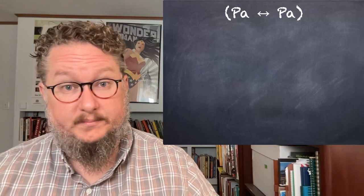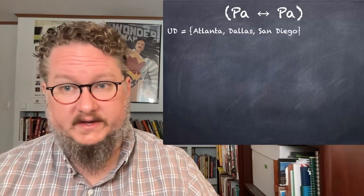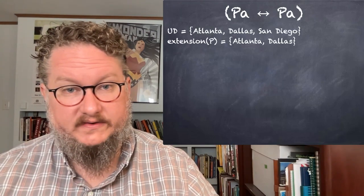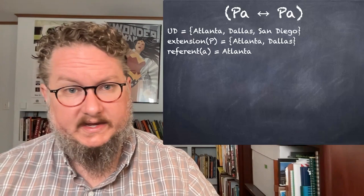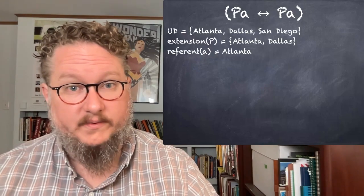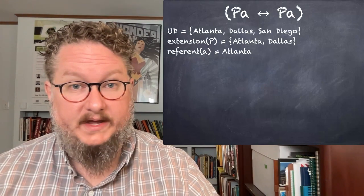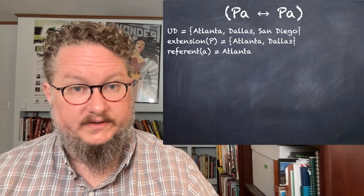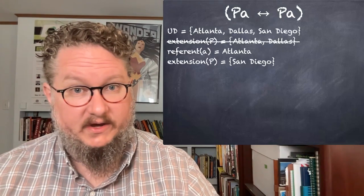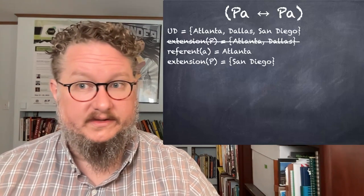Let's think about another statement: PA if and only if PA — a biconditional between PA and PA. With our universe of discourse and the extension of P including Atlanta and Dallas, and the referent of A referring to Atlanta: PA is true because Atlanta is in the extension of P, so it's true on both sides of the biconditional, making the sentence true. If we replace the extension of P with just San Diego so Atlanta is not in the extension, it's false on both sides, so the biconditional is still true.